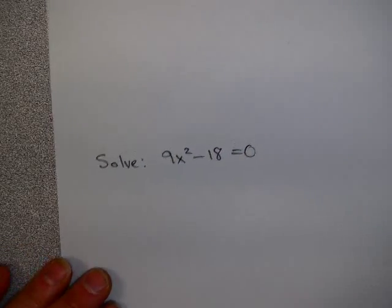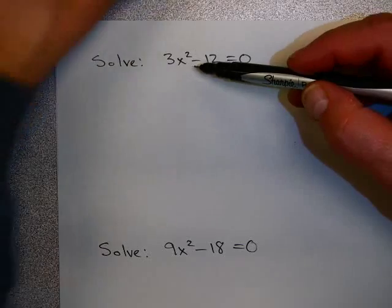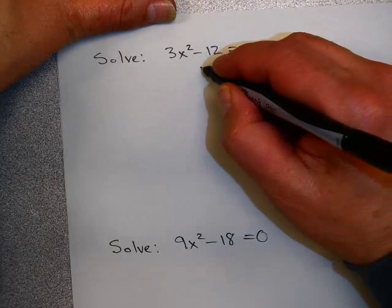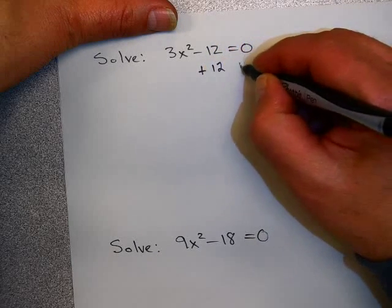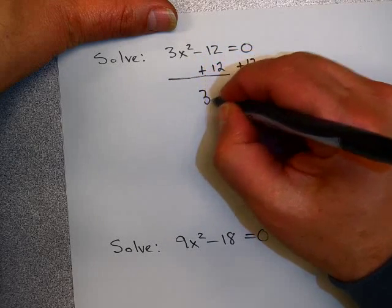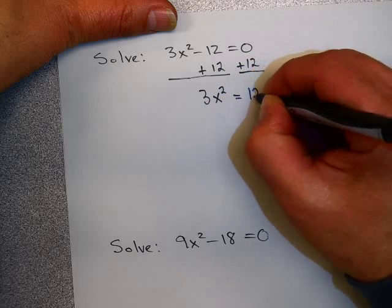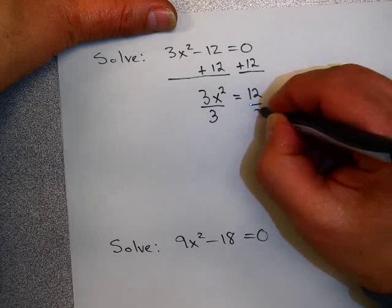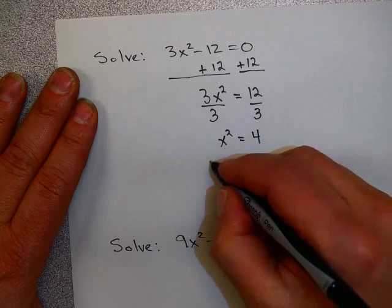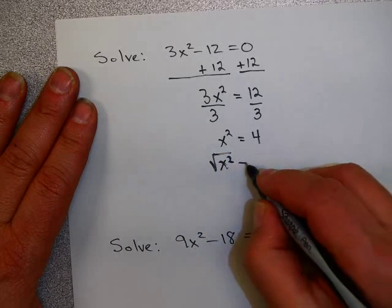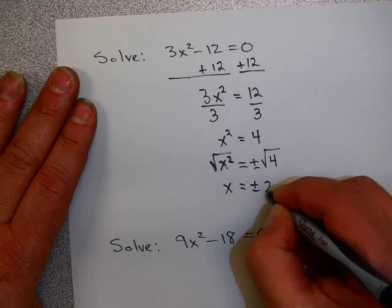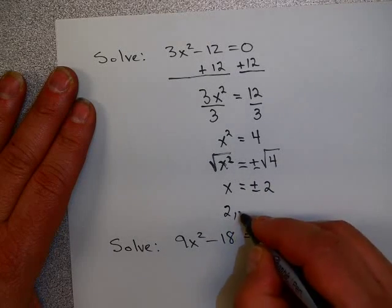Let's get a little harder and work with something like this. This is a quadratic equation. You'll notice there's only a squared term and a constant. If that's what you have, what you can do is you can isolate x squared. So I can move 12 to the other side. Divide both sides by 3. And get x squared equals 4. If I take the square root of both sides. Don't forget your plus or minus. x equals plus or minus 2. So my answers are 2 and negative 2.